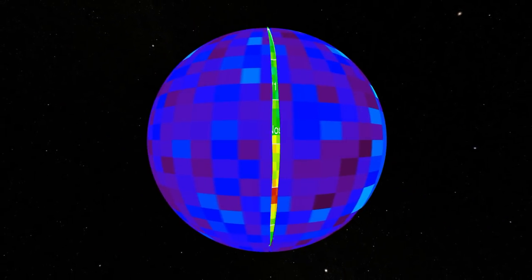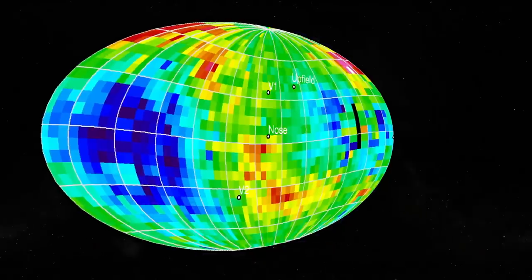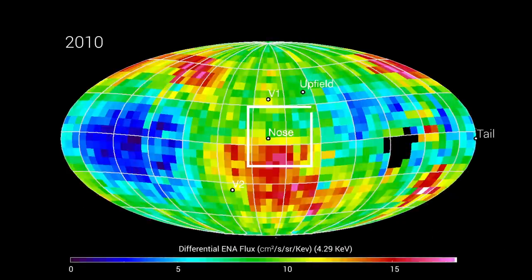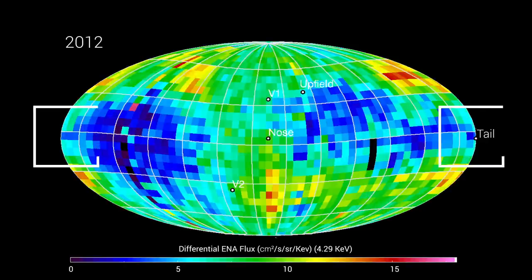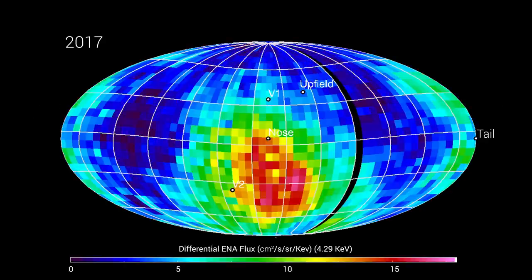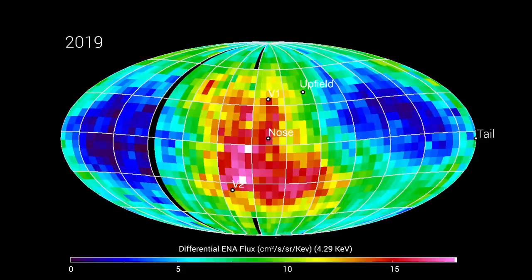If you cut the heliosphere and laid it out onto a flat surface, this is what you would see. This is the nose, and this is the tail. The nose shows high ENA fluxes, which indicate a strong gust of wind and the heliosphere ballooning.